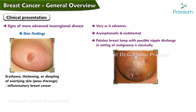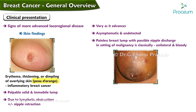Breast discharge in the setting of malignancy is classically unilateral and bloody. Peau d'orange appearance refers to skin thickening that makes the breast look like an orange peel due to lymphatic obstruction, with or without nipple retraction and axillary lymphadenopathy.